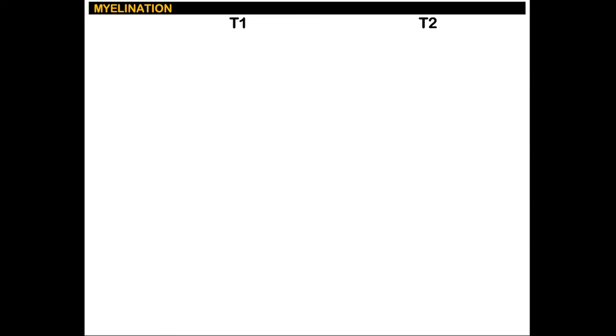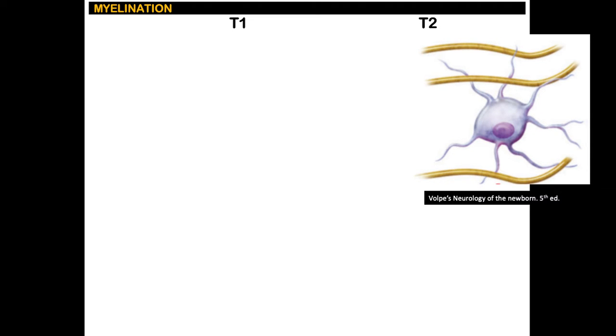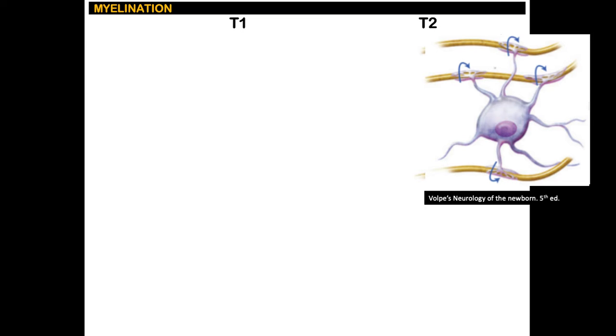To understand myelination we have to know where it comes from. This is an oligodendrocyte, and myelin comes from the oligodendrocyte processes or extensions of its plasma membrane. As it matures, the processes touch the axons and then later tighten and thicken as they wrap around these axons.